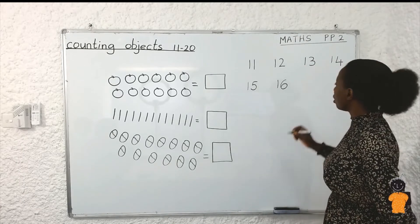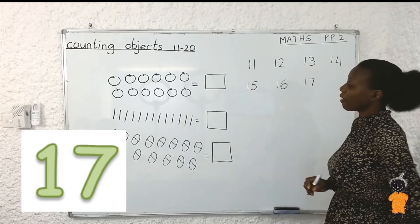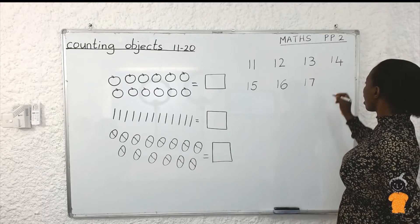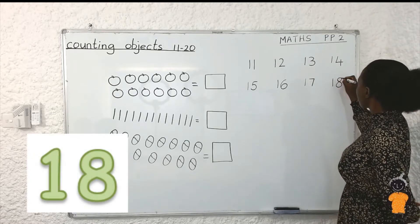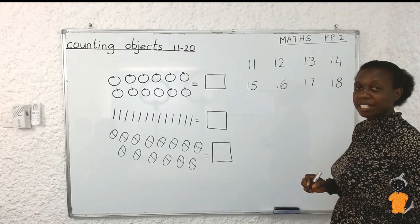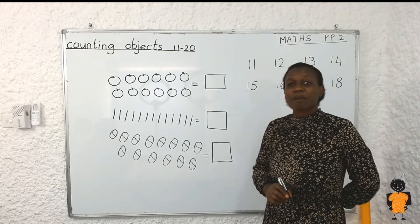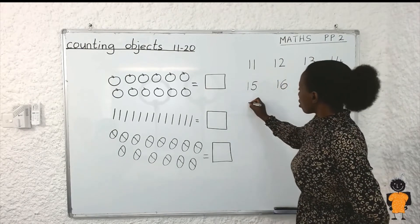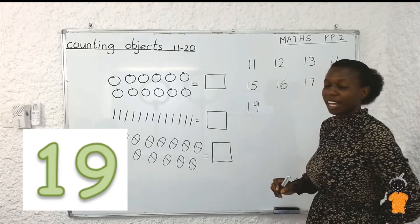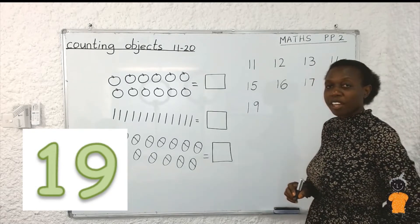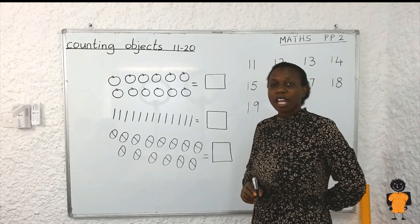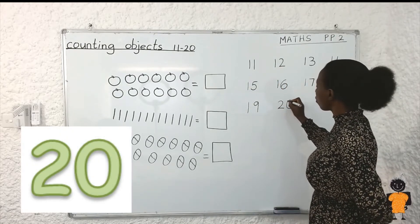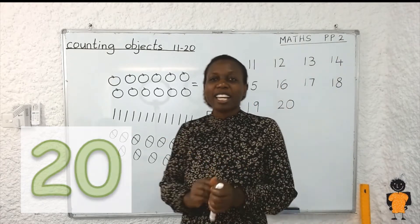Very good! Did you say 1 and 7? That is number 17. Then we go to number 18, which we write as 1 and 8. From 18 we go to number 19 — can somebody tell us how we write number 19? Did you say 1 and 9? Excellent! And from number 19, which number do we go to? Number 20, which is 2 and 0. Very good! Can you give yourself a clap? Wonderful!